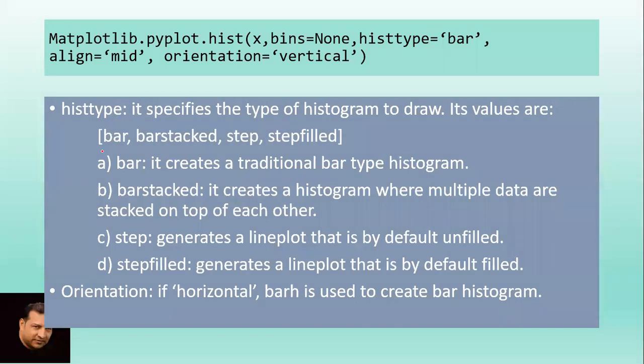Histtype specifies the type of histogram to draw. Its values are bar, barstacked, step, and stepfilled. Bar creates a traditional bar type histogram. Barstacked creates a histogram where multiple data are stacked on top of each other. Step generates a line plot that is by default unfilled.